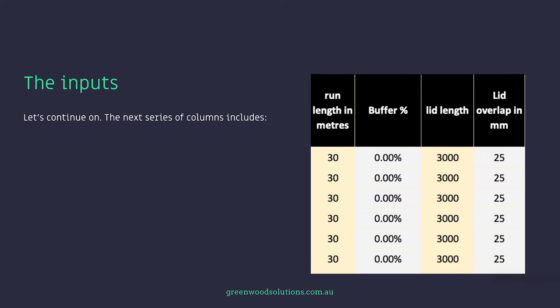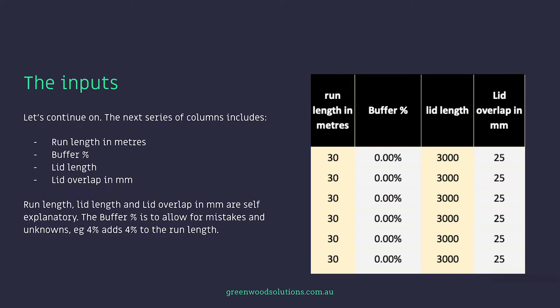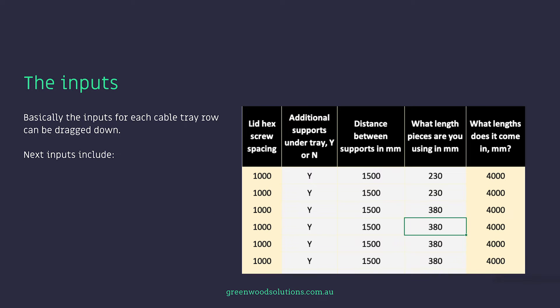The next series of columns include the run length in metres, the buffer percentage, the lid length and the lid overlap in millimetres. Run length, lid length and lid overlap are self-explanatory. The buffer percentage is to allow for mistakes and unknowns — for example, you could add 4% to the run length. The inputs for each cable tray row can be dragged down depending on how many rows you're actually using on your project.